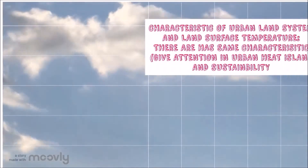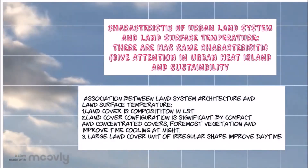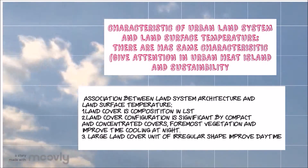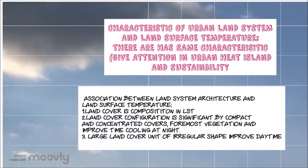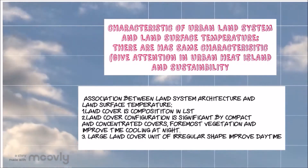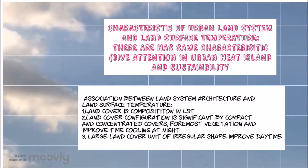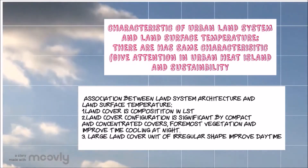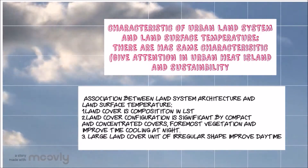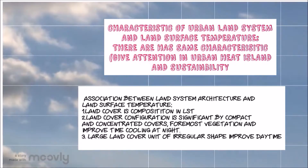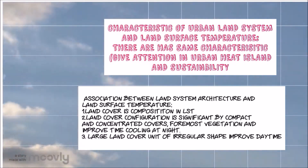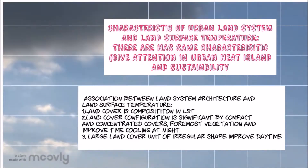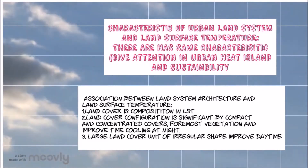For the fourth journal, this discusses the characteristics of urban land systems and land surface temperature, with shared attention given to urban heat islands and sustainability. The association between land system architecture and LST: first, land cover composition influences LST; second, land cover configuration is significant — dispersed versus concentrated vegetation cover improves nighttime cooling; lastly, LST land cover units of irregular shape improve daytime conditions.